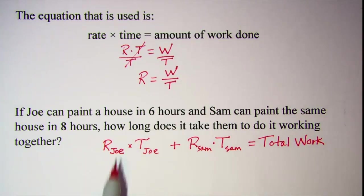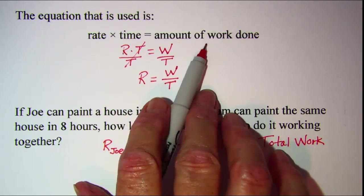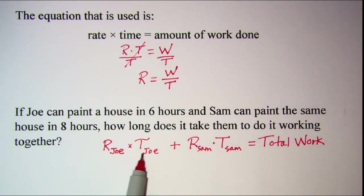Now notice this expression right here is just the amount of work done by Joe because rate times time equals work done. So Joe can do this amount of work and Sam can do this amount of work. So if you add those together you'll get your total work.